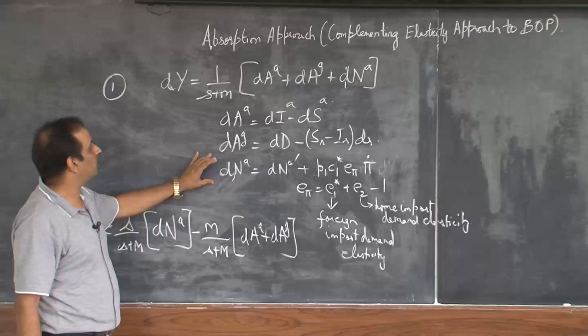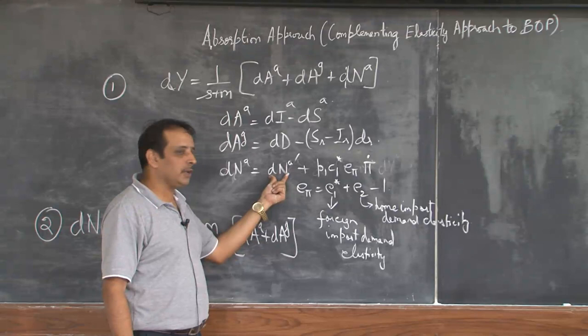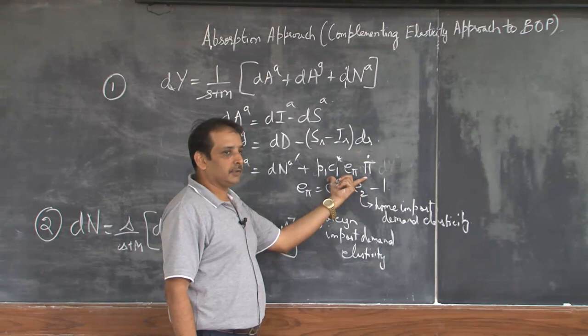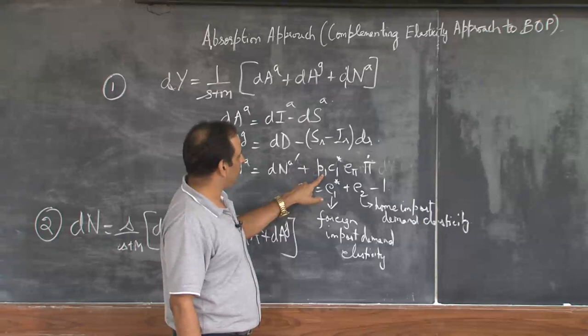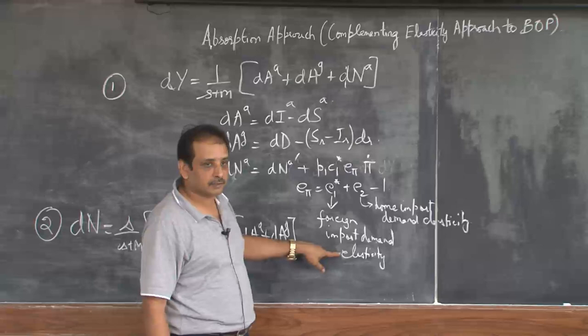The only difference that we do now is that we divide this into two components. One is purely autonomous and the other is the one which relates to the elasticities. If you recall, dN was P₁C₁* E_π π-dot, where E_π is E₁* plus E₂ minus 1. This is foreign import demand elasticity and home import demand elasticity.